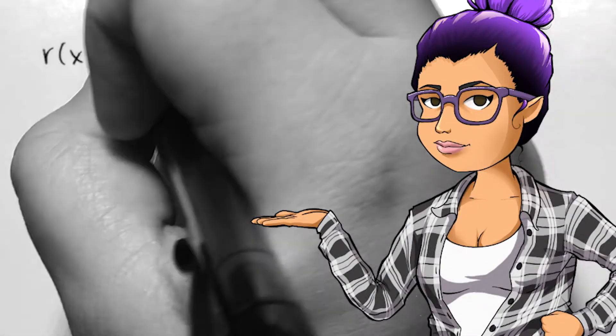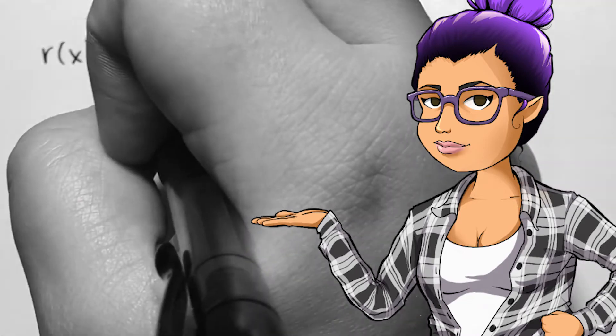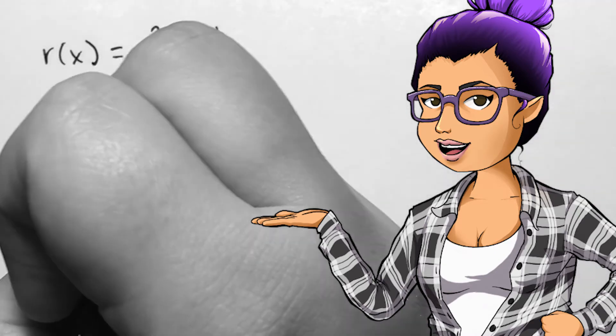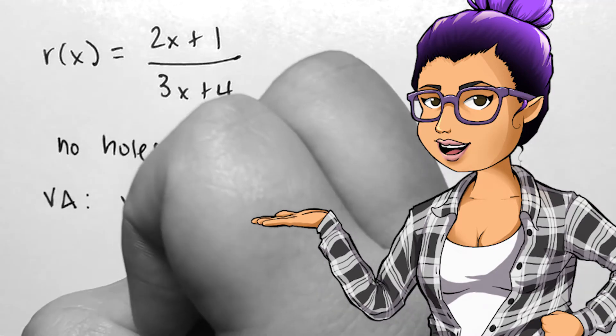If r of x is 2x plus 1 over 3x plus 4, there are no removable discontinuities, so no holes on the graph. There is a vertical asymptote at x equals negative 4 over 3.